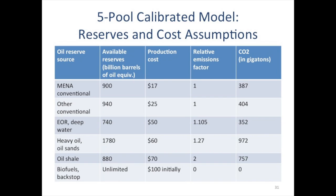The next thing we do is calibrate a five-pool model — a stylized five-pool model of the IEA graph. We get their central estimates, reserves estimates, and production cost. We get relative emissions factors from the EPA. There are some pretty significant differences: oil sands are about a quarter more emissions intensive than conventional oil, and oil shale is twice as emissions intensive.